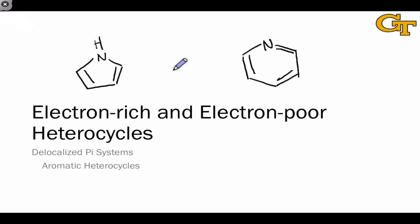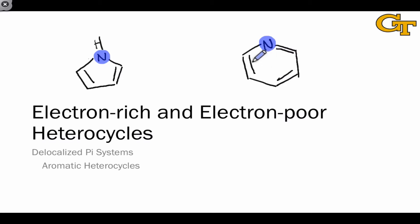So far we've seen that pyrrole and pyridine are good examples of electron-rich and electron-poor heterocycles respectively, and we can trace this back to the nature of the nitrogen atom within these structures. The nitrogen in pyrrole looks like an electron-donating group, an N3 nitrogen, while the nitrogen in pyridine, an N2 nitrogen, resembles an electron-withdrawing group. In this video we're going to look at other examples and generalize this idea: when an electron-donating group appears within an aromatic heterocycle, the ring is electron-rich, and when one or more electron-withdrawing groups appears, the ring is electron-poor.